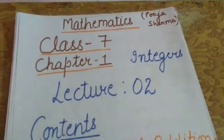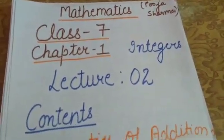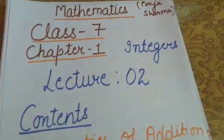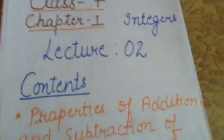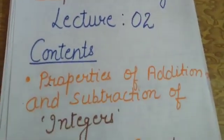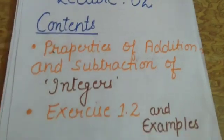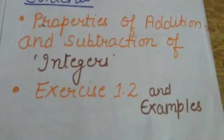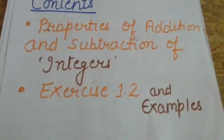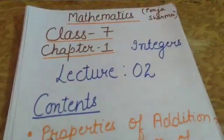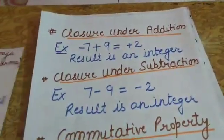Hello everyone, this is for subject mathematics, class 7th, chapter 1: Integers. This is our lecture number 2. In this lecture we will learn about properties of addition and subtraction of integers and we will discuss questions related to exercise 1.2 and the examples before it. So let us start with the properties.